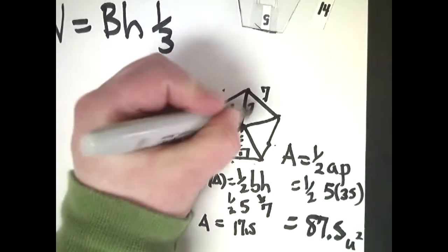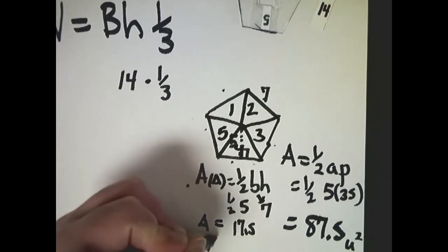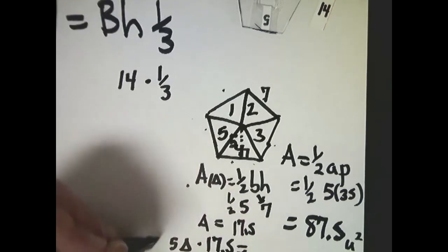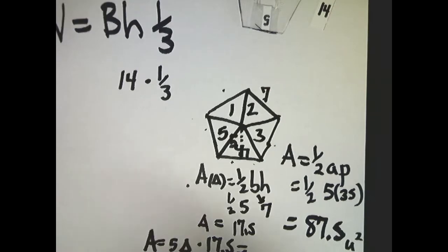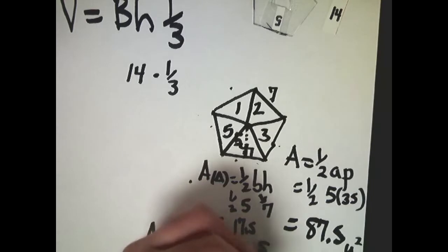Now, you can count 1, 2, 3, 4, 5 of those triangles. So if there are 5 triangles, and each one of those triangles is 17.5, then your total area of the figure would be 87.5.